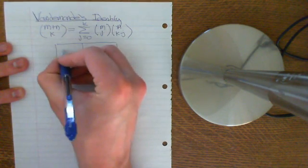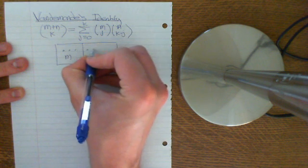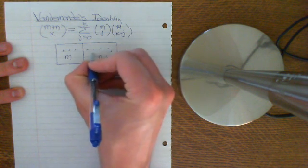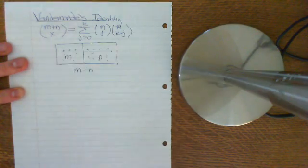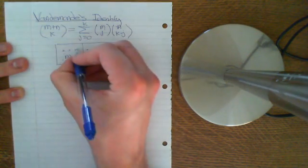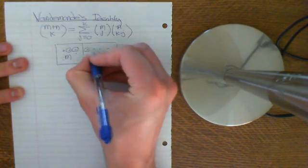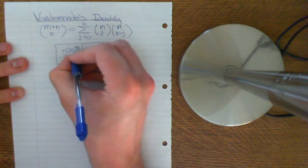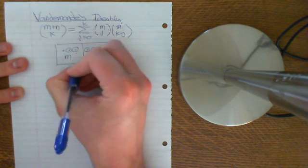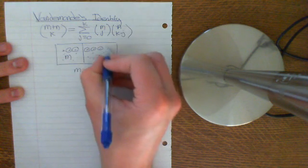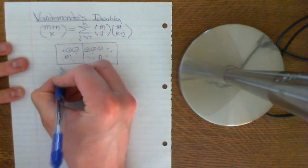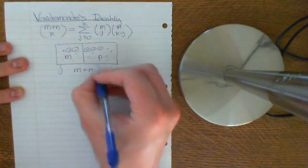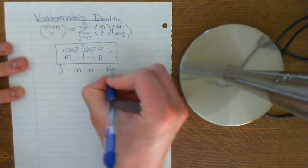And we are asking how many ways are there of selecting k different things from here where order does not matter? Well, basically, whenever you choose k things, you're going to end up choosing a certain number from this set, this set of m things, and a certain number from this set, n things. So let's say you choose j things from here, and therefore you have to choose k minus j from here.